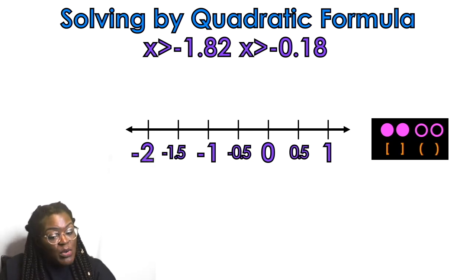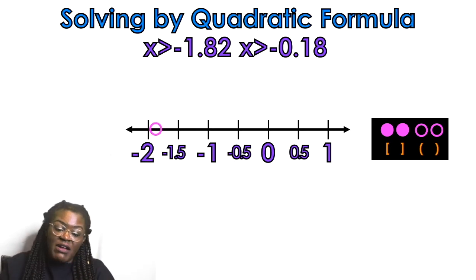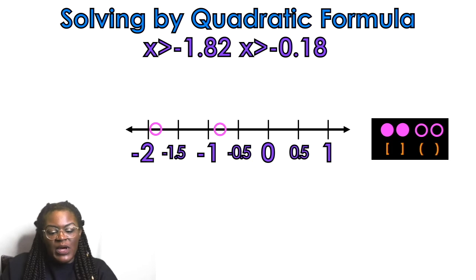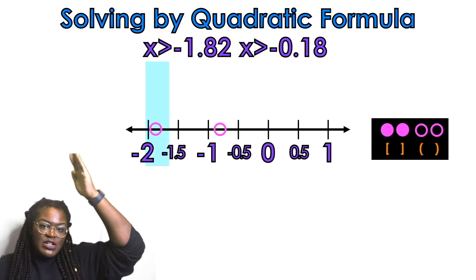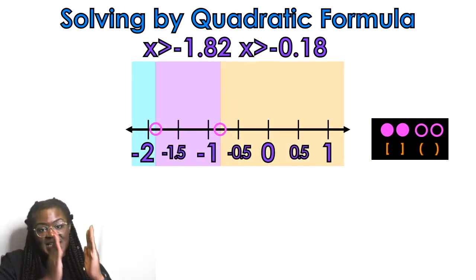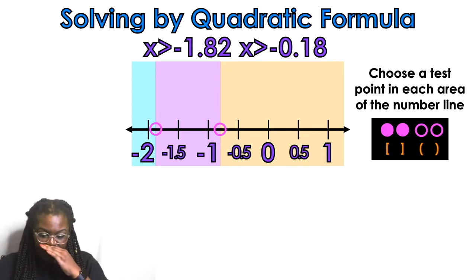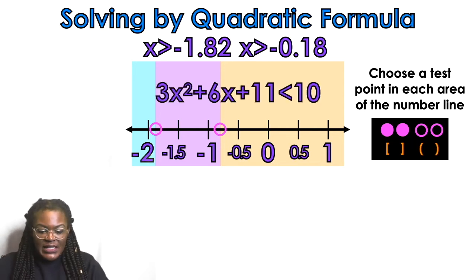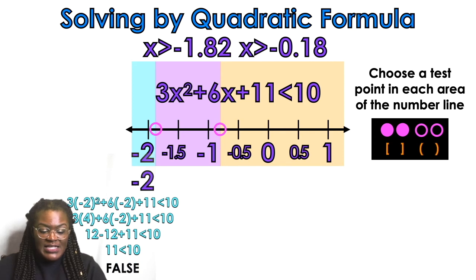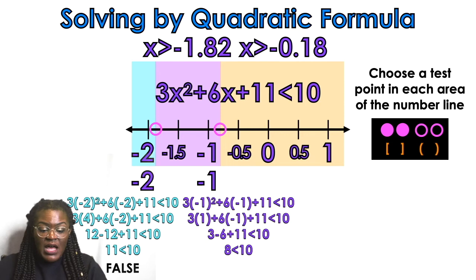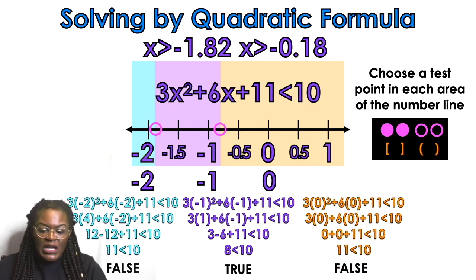Looking at our inequality symbol — less than — we use open circles. On the number line I went by 0.5 increments since the numbers are close together: negative 2, negative 1.5, negative 1, negative 0.5, 0, 0.5, 1. Negative 1.82 goes near negative 2, and negative 0.18 goes between negative 0.5 and 0. Test points: negative 2 in the blue area is false; negative 1 in the purple area is true.